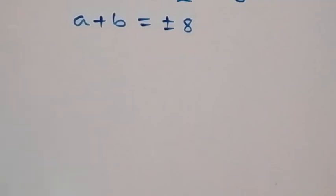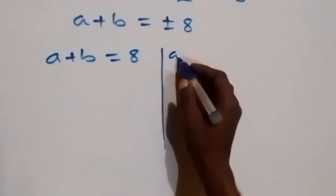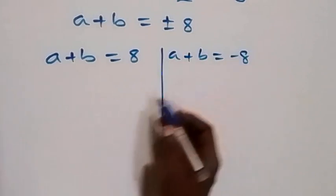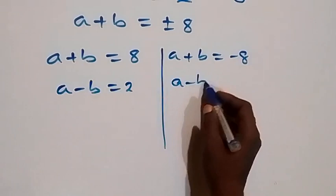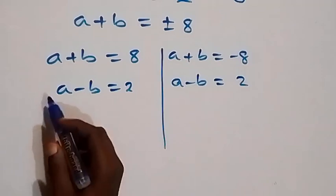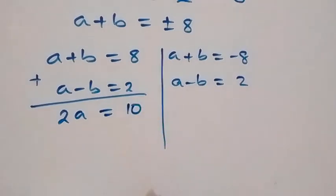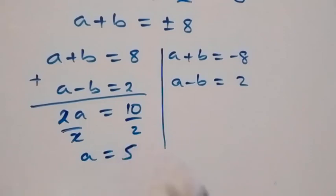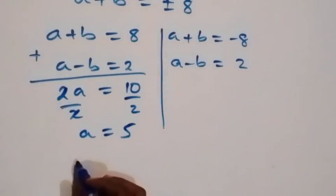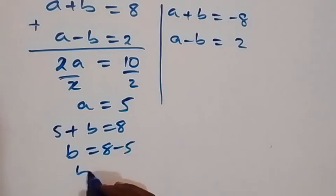We have two values: A plus B equals 8, and A plus B equals minus 8. Solving with equation 1 — A minus B equals 2 — by adding, we get 2A equals 10, so A equals 5. Substituting back, 5 plus B equals 8, giving B equals 3.